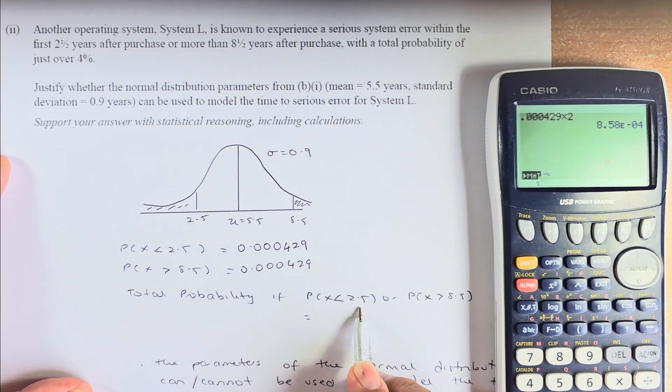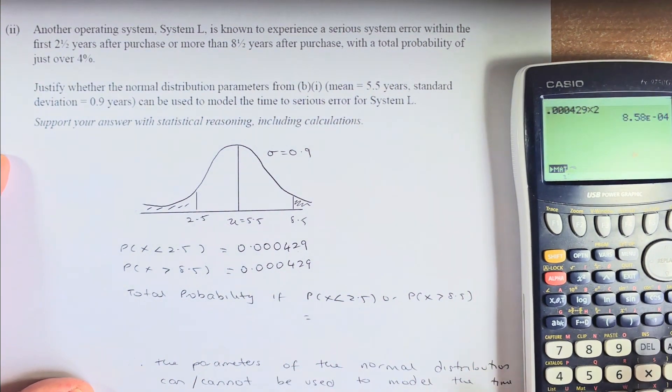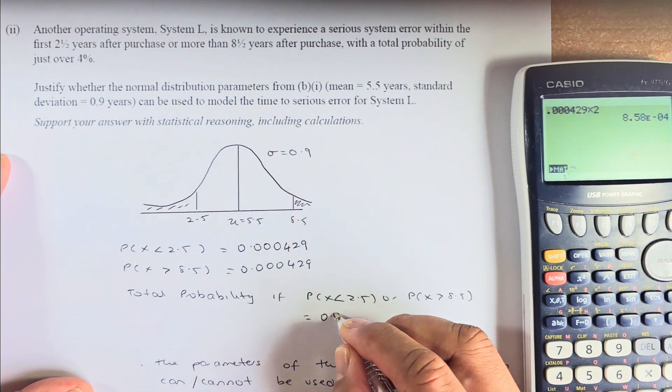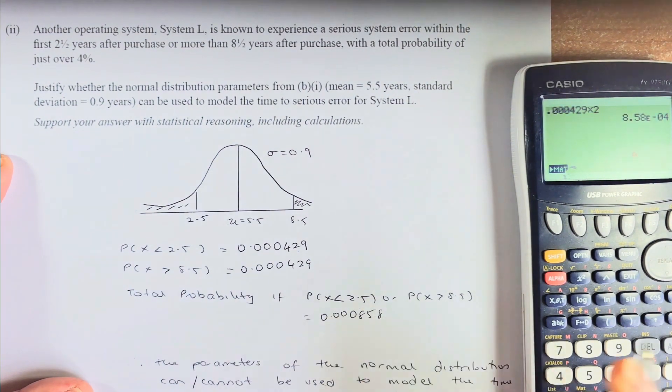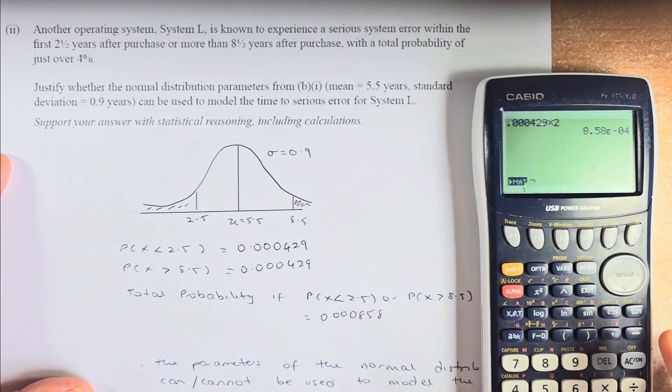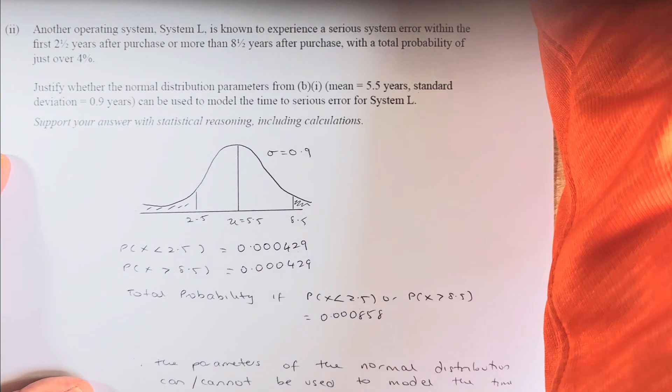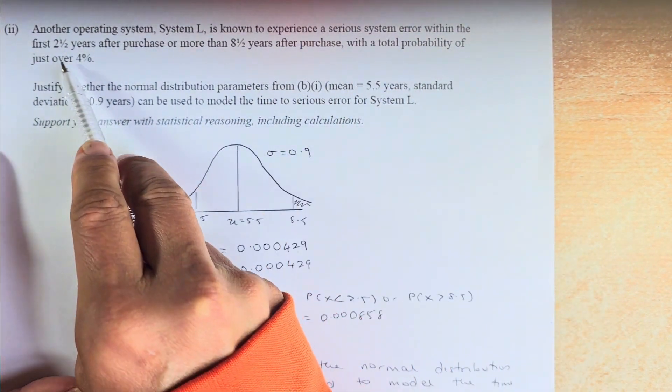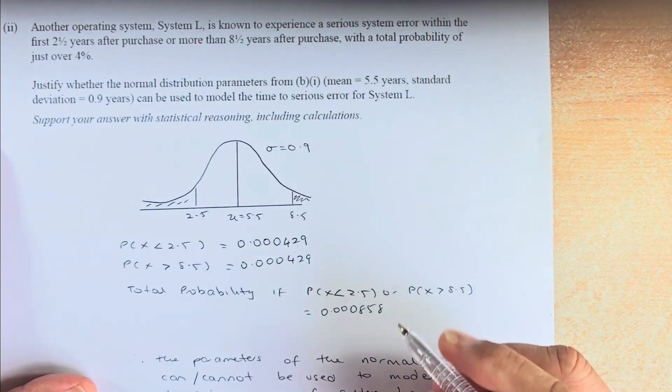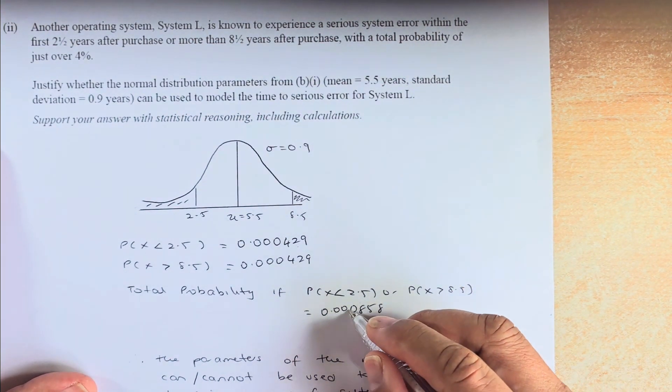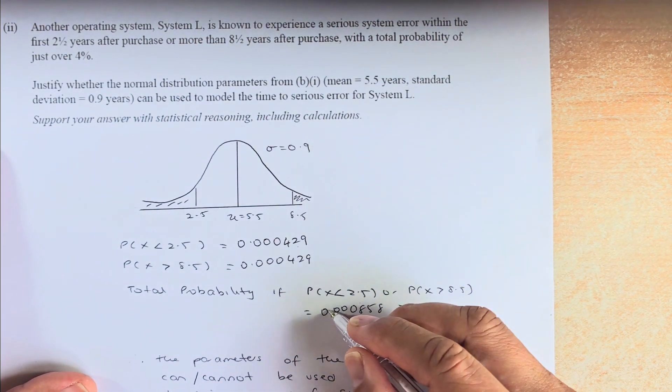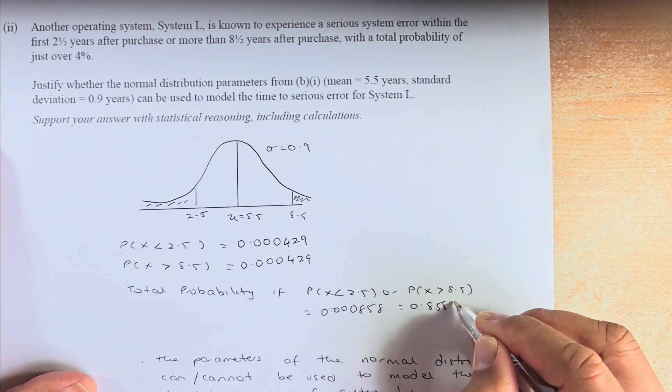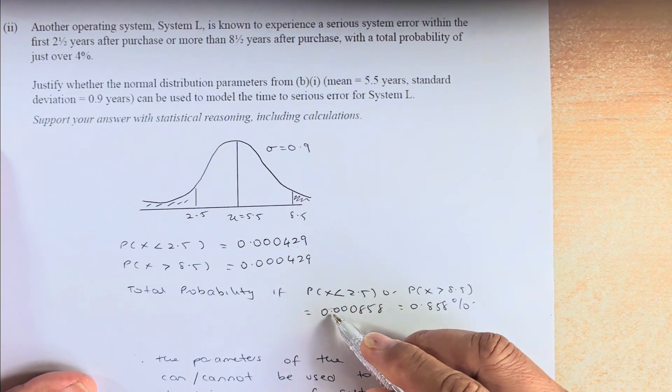Probability X is less than 2.5 and X greater than 8.5, you're going to add these two numbers. So the answer comes up to 0.000858. If you convert it to probability, it's going to be 0.0858%.